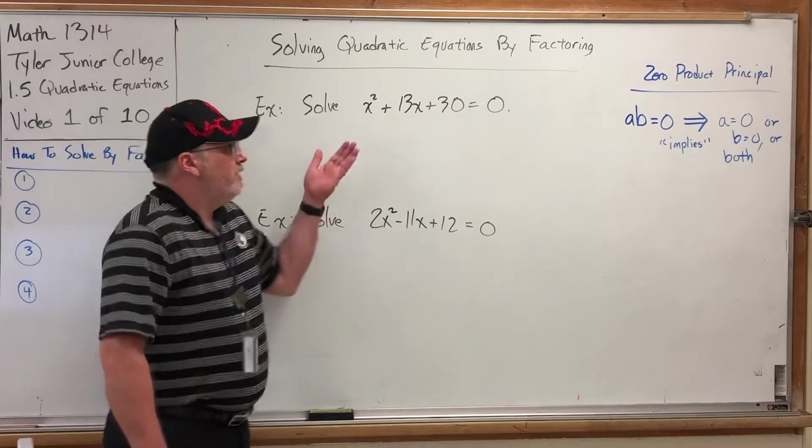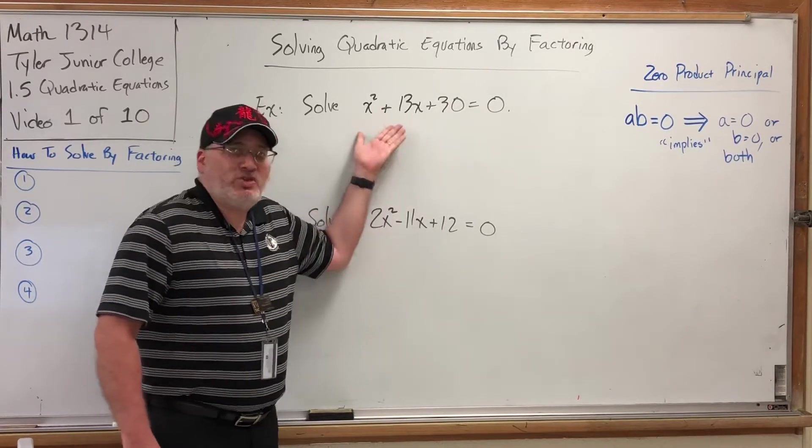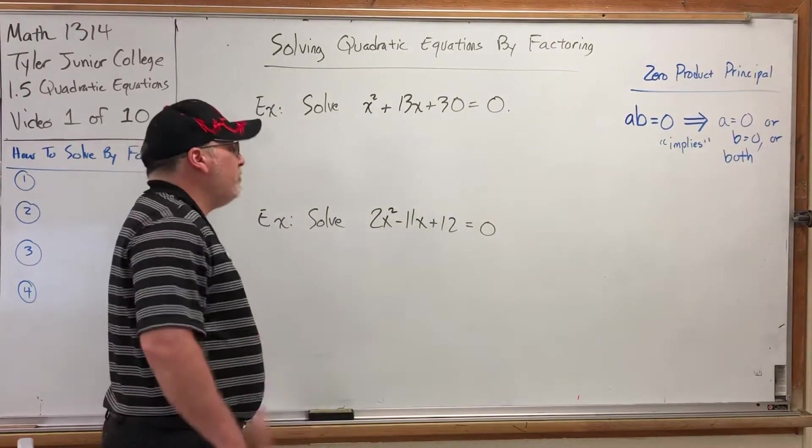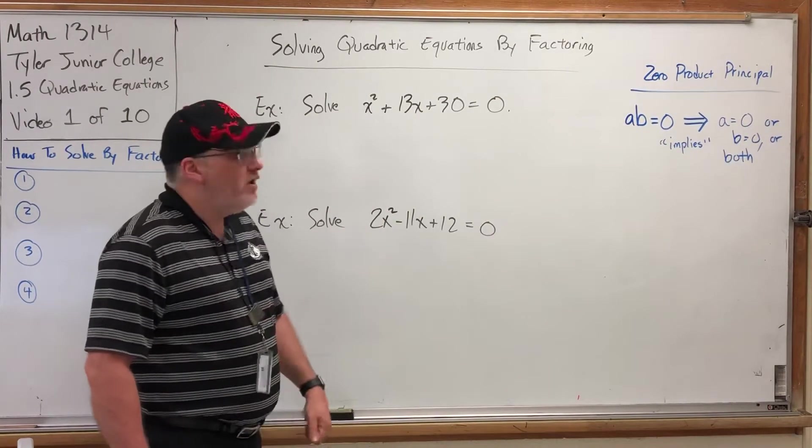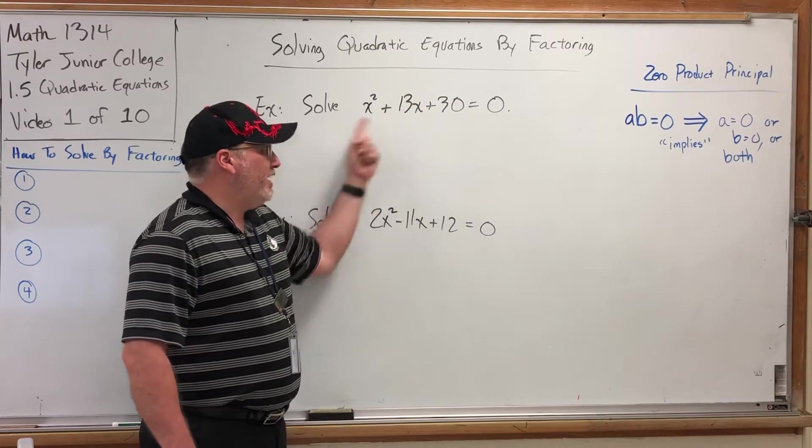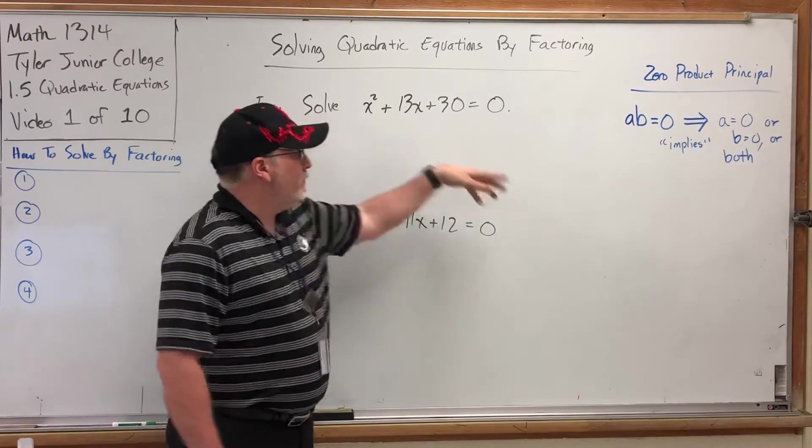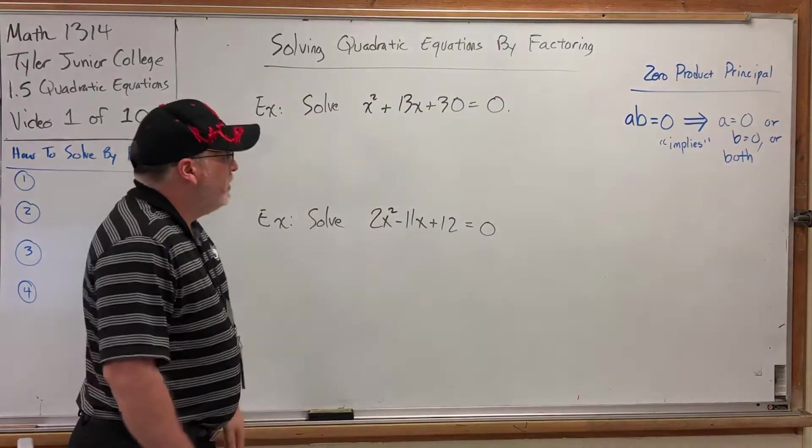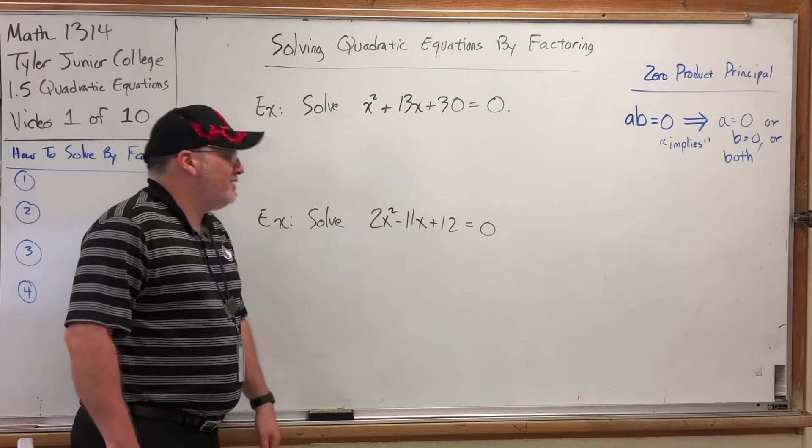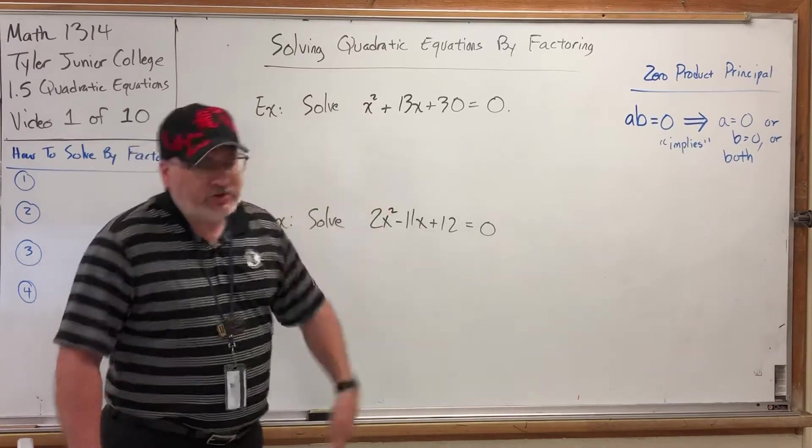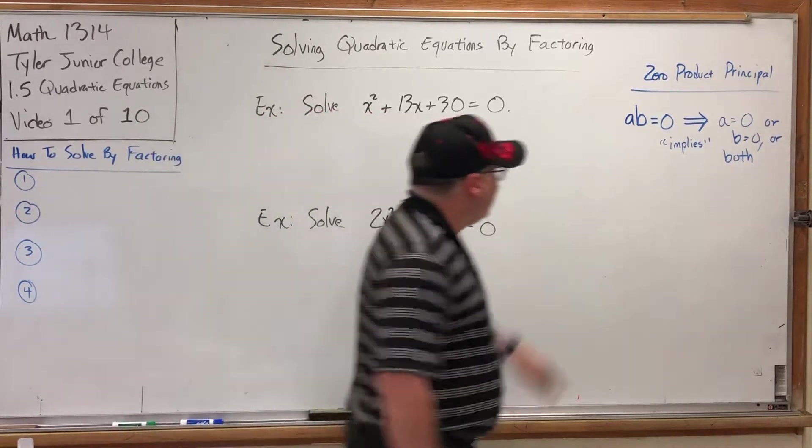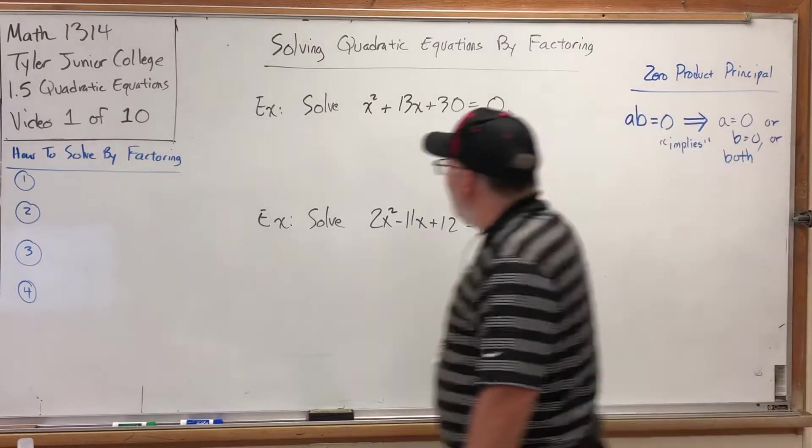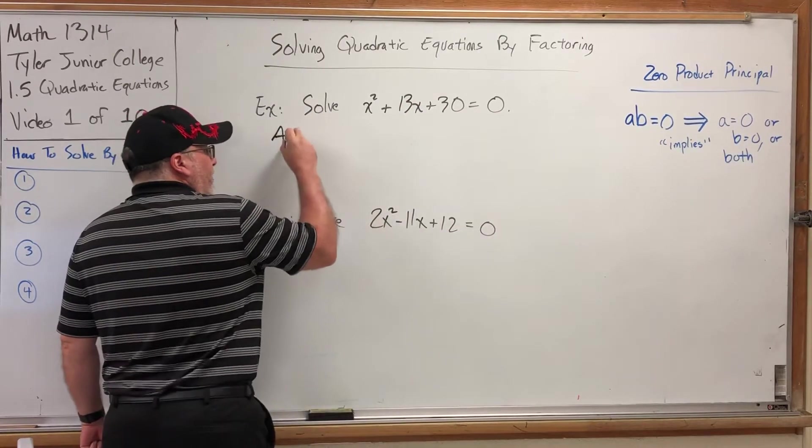So how can we use that to our advantage? Well, the biggest obstacle in solving something like x squared plus 13x plus 30 equals zero is too many different x terms. Normally, when you solve an equation, you get x by itself. But, we have two incompatible x terms. They're not like terms. I can't combine them. I can't just move one to the other side and start solving because the other one gets trapped inside of whatever I solve for. So our biggest obstacle right now is that we have too many x's, specifically these two x's glued together. So how can we work around that? Well, if we can get a product equal to zero, the zero product principle says that we can set each factor equal to zero.